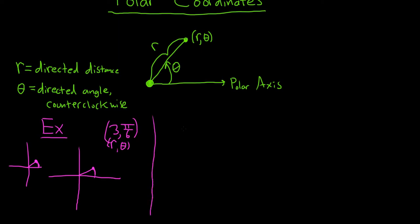If instead we had (-3, π/6), again, it's the same thing. You first travel theta, so you first go π/6. So maybe we're here. There's our π/6. But r is negative, so you go the other way. And so that would be your point.